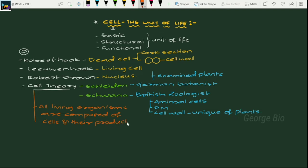However, they failed to represent the origin point of these cells. Because of not predicting the origin point of the cell, this became an incomplete cell theory.